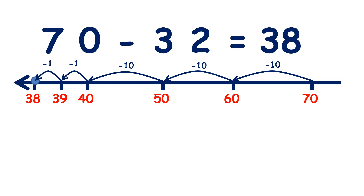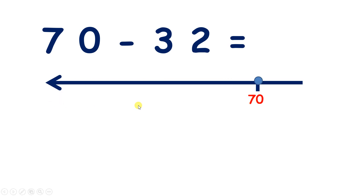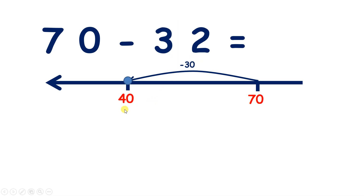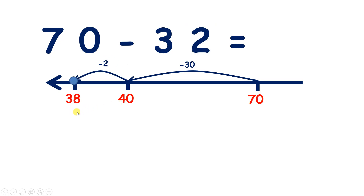But how could we do 70 minus 32 in fewer steps? Well, if we have 70, we have seven tens. So if we subtract three tens, or 30, we'll have 40. So we've subtracted 30. Now we can subtract two more. 40 take away 2 is 38. So 70 minus 32 is 38.